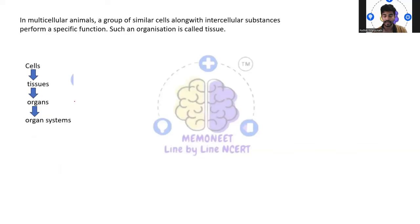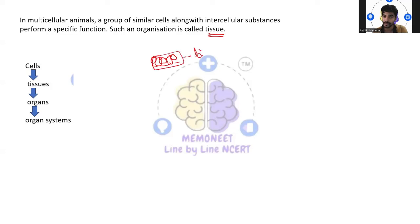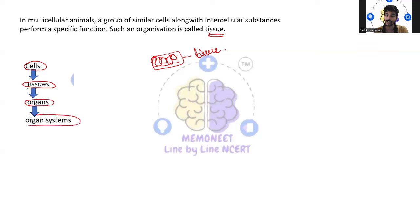In multicellular organisms, a group of similar cells align together to perform a specific function — we call them tissues. Similar cells bind up together forming tissues. Tissues again — a similar kind of tissues will bind up to form a specific organ. From organs, we will have organ systems. In this way, we will understand how exactly our organs, organ systems, and the entire structure of a living organism, especially animals, has evolved.